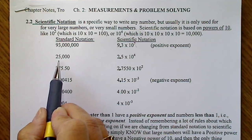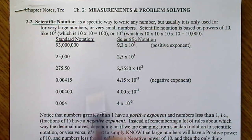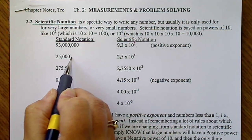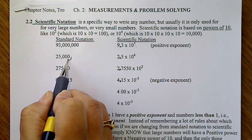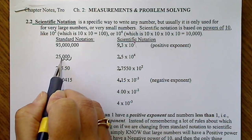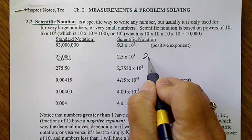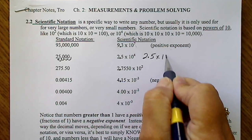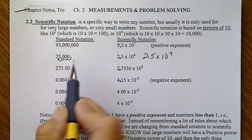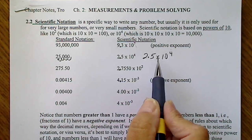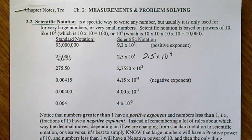So for example, to put 25,000 in scientific notation, we would take the decimal and move 1, 2, 3, 4 places. So we have 2.5 times 10 to the 4th. Notice these zeros are not written down, so we're going to discuss that more when we talk about significant figures.